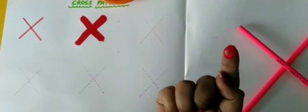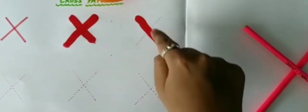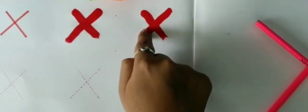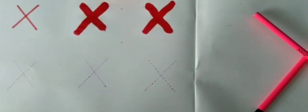See, now one more. One slanting line. Second, opposite slanting line. See, this is cross pattern.